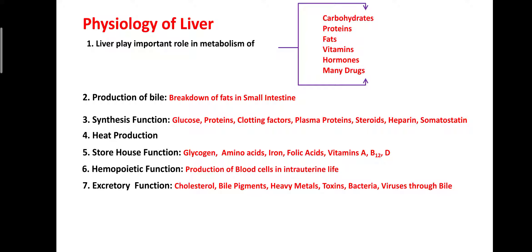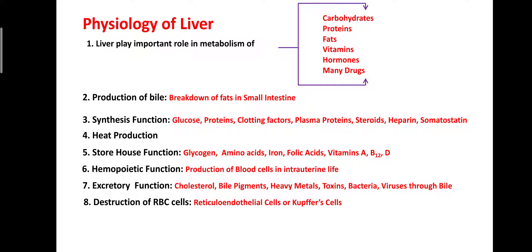Excretory functions: the liver plays an important role in the excretion of cholesterol, bile pigments, heavy metals, toxins, bacteria, and viruses through bile. Destruction of red blood cells (RBCs) is also carried out in the liver, which contains special types of cells known as reticuloendothelial cells or Kupffer cells. These cells are responsible for the destruction of RBCs, and due to this destruction, heme and protein are separated and required for further formation of RBCs or hemoglobin. The liver also plays an important role in converting poisonous ammonia into urea.